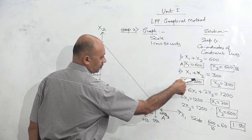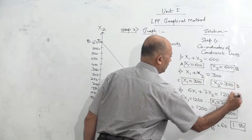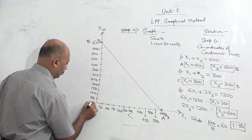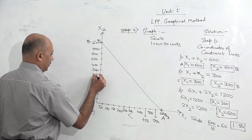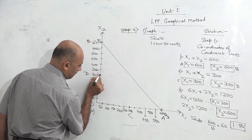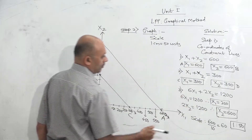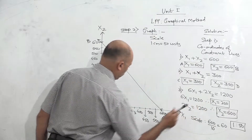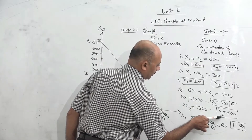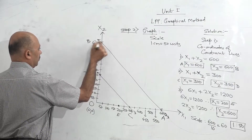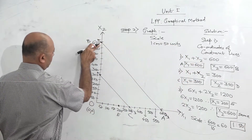The second constraint line is x1 plus x2 greater than or equal to 300, with coordinates x1 equals 300 and x2 equals 300. Name these point C and point D. Join C and D — this is the second constraint line. The third constraint line is 6x1 plus 2x2 greater than or equal to 1200, with coordinates x1 equals 200 (point E) and x2 equals 600 (which is already point B). Join E and B for the third constraint line.